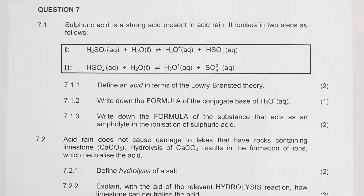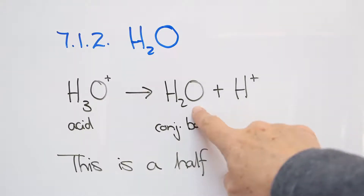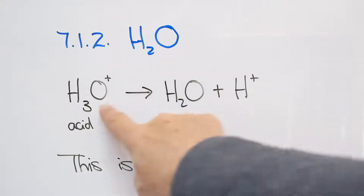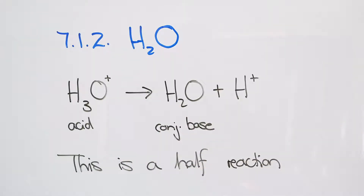7.1.2: Write down the formula of the conjugate base of the hydronium ion. The answer is in blue. The conjugate base of the hydronium ion is the water molecule. When the hydronium ion H₃O⁺ donates a proton, the water is what remains — so H₃O⁺ is the acid and H₂O is the conjugate base. Note that they asked for the formula; if they asked for the name, you would write 'water'.